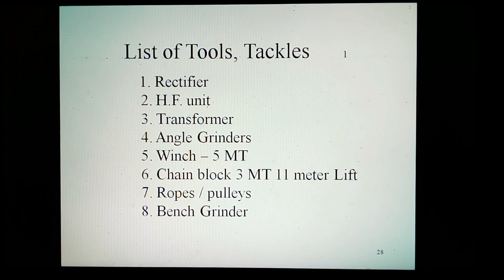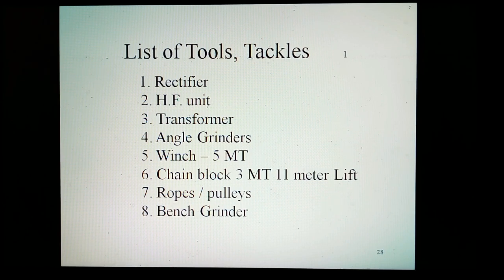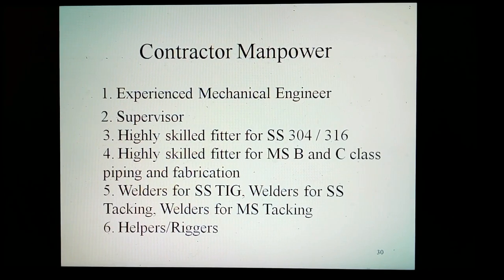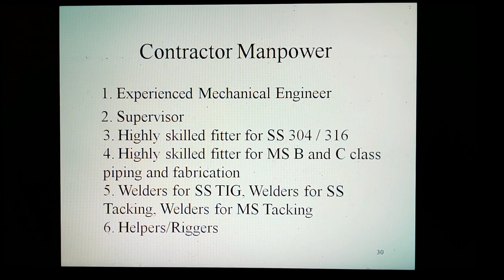List of tools, tackles, and machinery required to carry out piping works, to be arranged by the contractor: rectifier, HF unit, transformer, grinder AG7, winch 5 metric tons, chain block 3 metric tons with 11-meter lift, ropes and pulleys, SF4 grinder, hacksaw, flat files, etc., and other tools and tackles such as pipe vise, GQ4 grinder, abrasive cutting machine, and gas cutting equipment. Contractor manpower list for piping fabrication and erection: experienced mechanical engineer as in-charge, supervisor, high-skilled fitter for SS304, high-skilled fitter for MS/CS piping and fabrication, welders for SS TIG, SS SMAW, and MS SMAW, plus helpers.